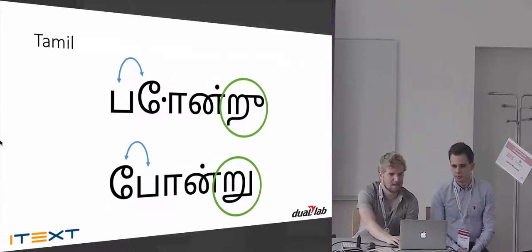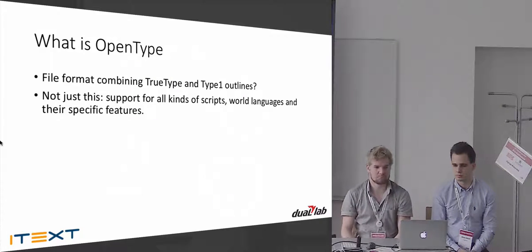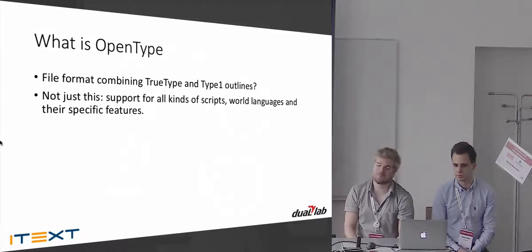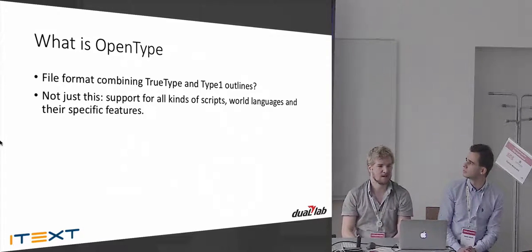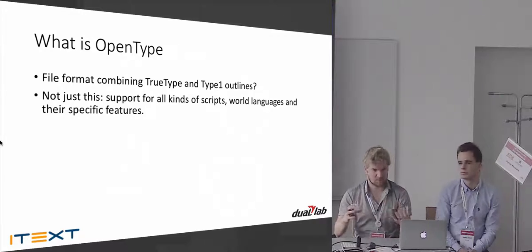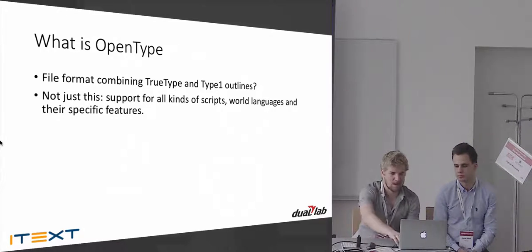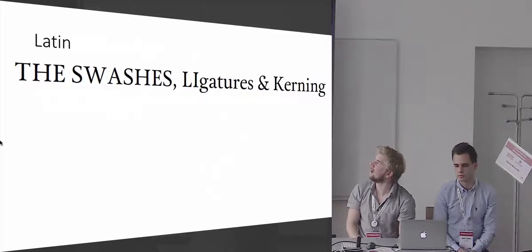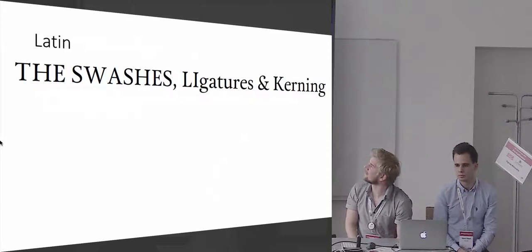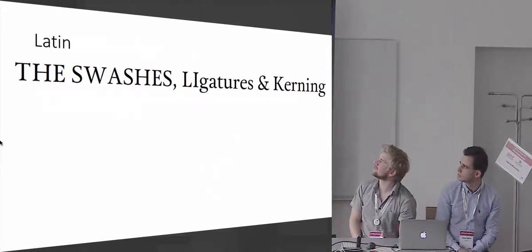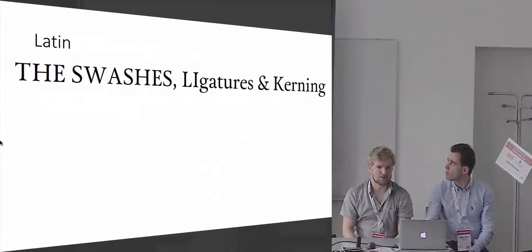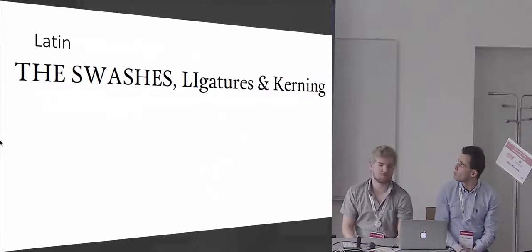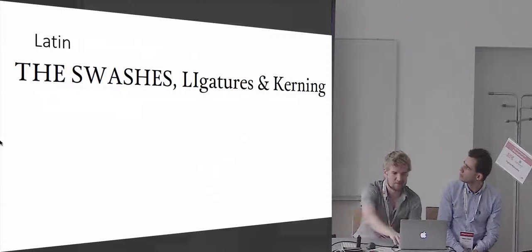Very simply, what is OpenType? It's a file format combining both TrueType and Type 1 outlines, but it's more than that — it supports all kinds of scripts, world languages, and specific features per script, per language, or even custom combinations of those. Since this is mostly a Western audience, we'll start with the principle in the Latin script. There's a contrived example to show some of the things that can happen when you want your font to be more beautiful than just character next to character.